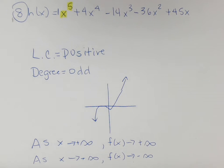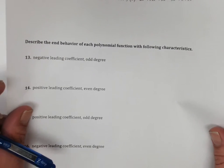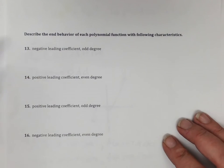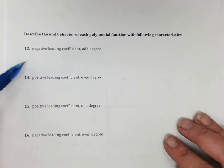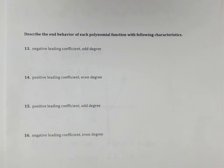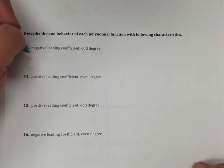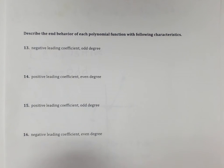I'd like to do one more quick example with you, and that is to just describe the end behavior of each polynomial function with the following characteristics. This is number 13 on your worksheet. Negative leading coefficient with an odd degree. So let's think about that.